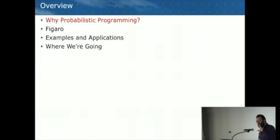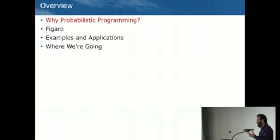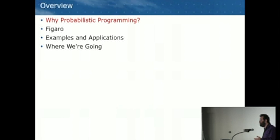I'm first going to talk to you about what exactly is probabilistic programming and why you might be interested in it. Then I'm going to talk about the system we've been developing called Figaro. I'm going to give you a few examples and applications, and then I'm going to talk to you about the future of the field and where we're going.